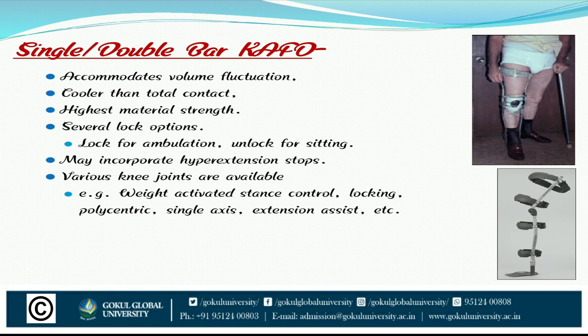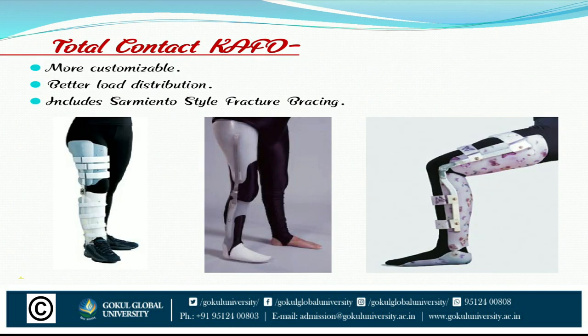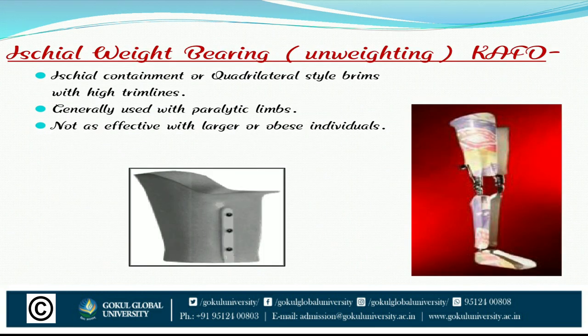Various knee joint options are available: weight-activated stance control, locking, polycentric, single axis, and extension assist. Total contact KFO is more customizable with better load distribution, including semi-rigid style fracture bracing. Ischial weight-bearing KFO uses a quadrilateral or ischial containment brim with high trim lines and is generally used with a paralytic limb; it is not as effective with larger or obese individuals.